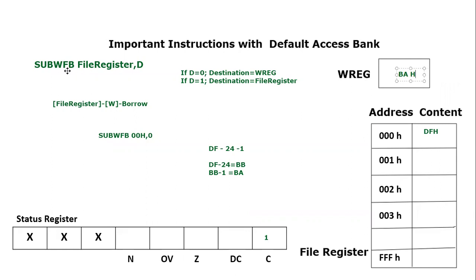It is very important to be careful when using the destination bit — either 0 or 1 — because it determines which register gets modified. I hope you have understood the concept and operation of this instruction. If you have any questions, you can post them in the comment section. Thank you so much for listening.